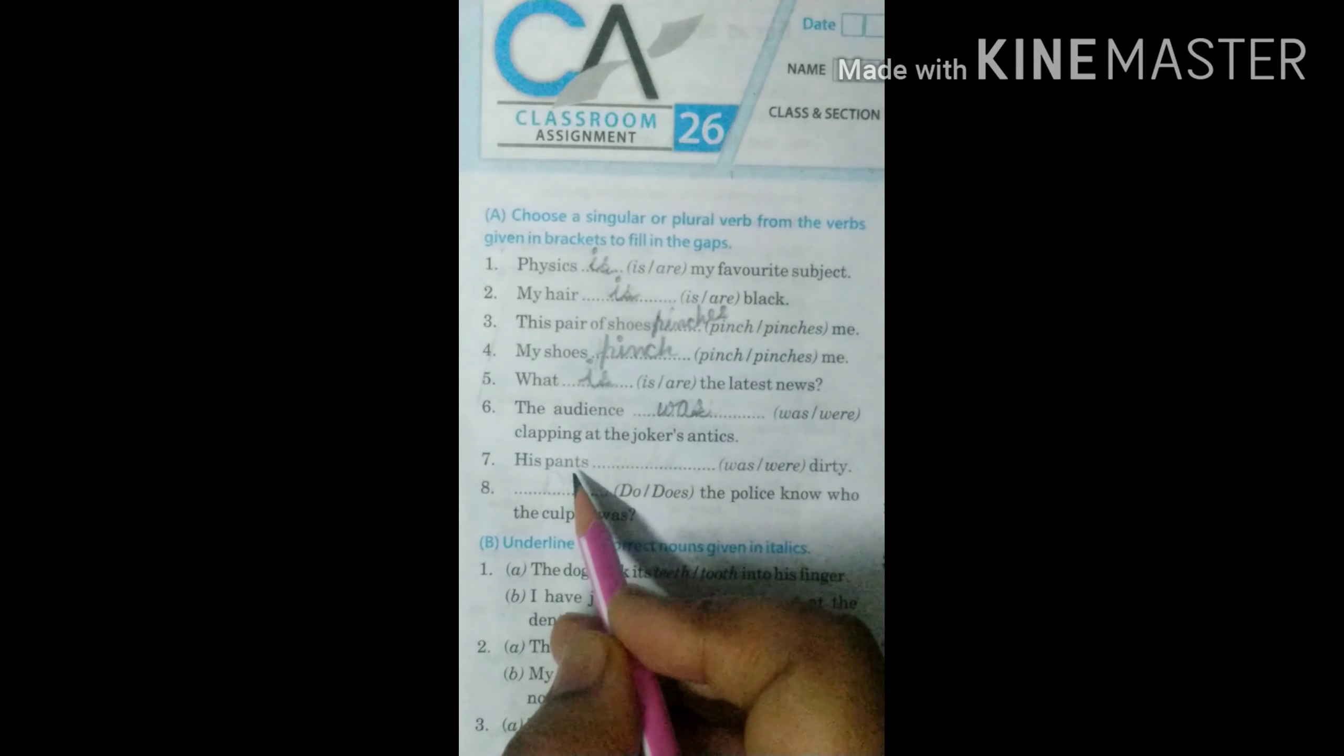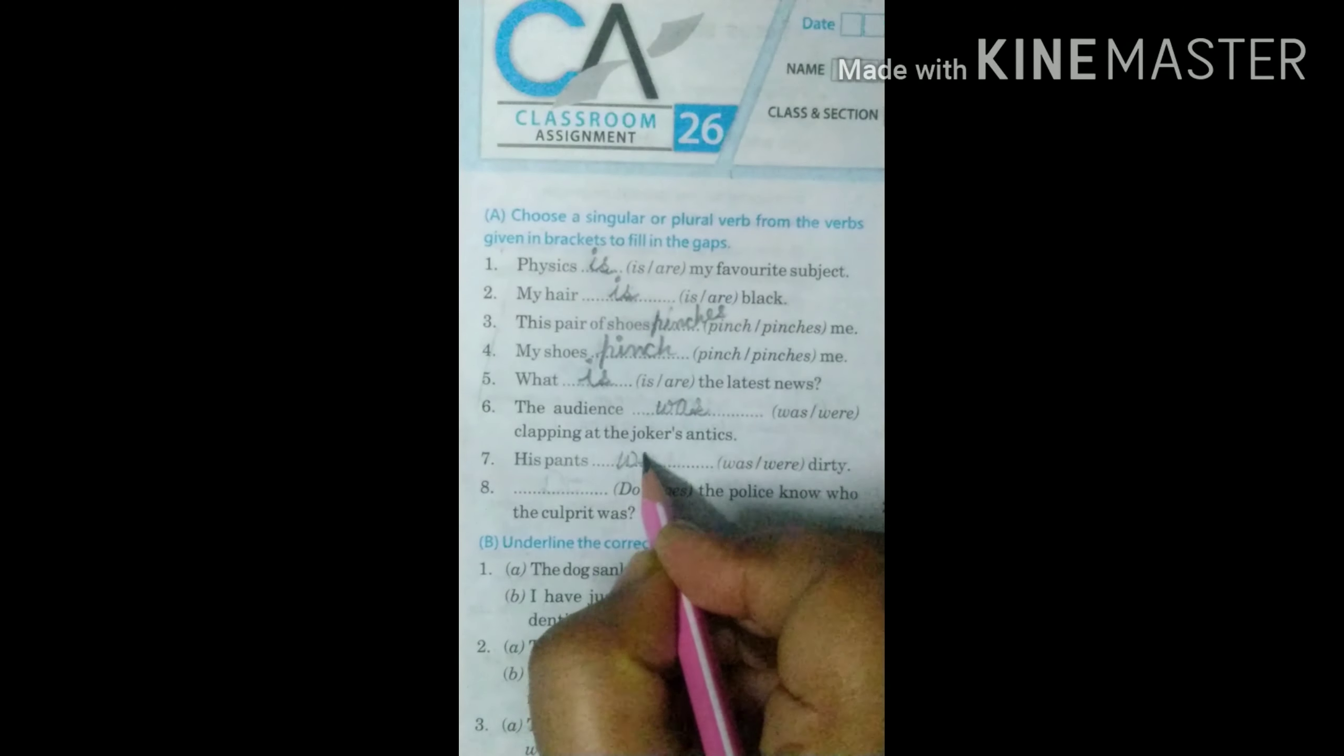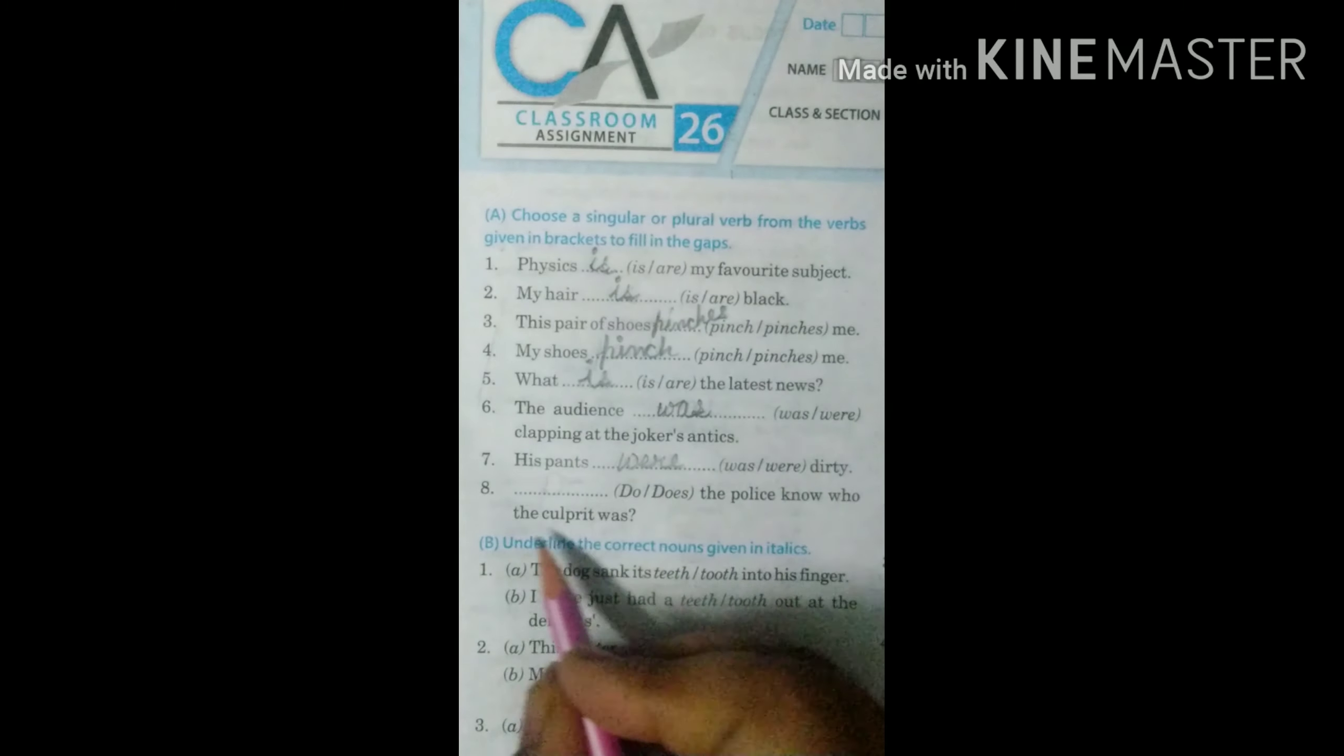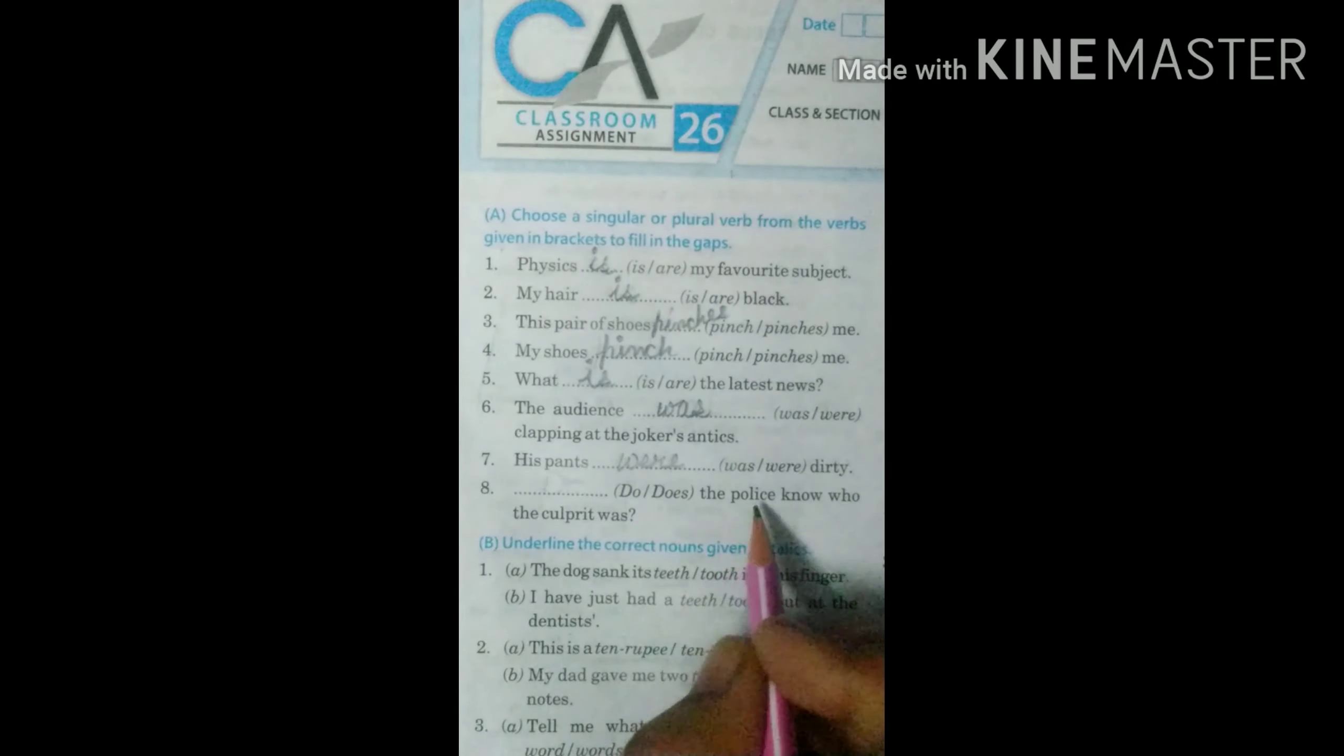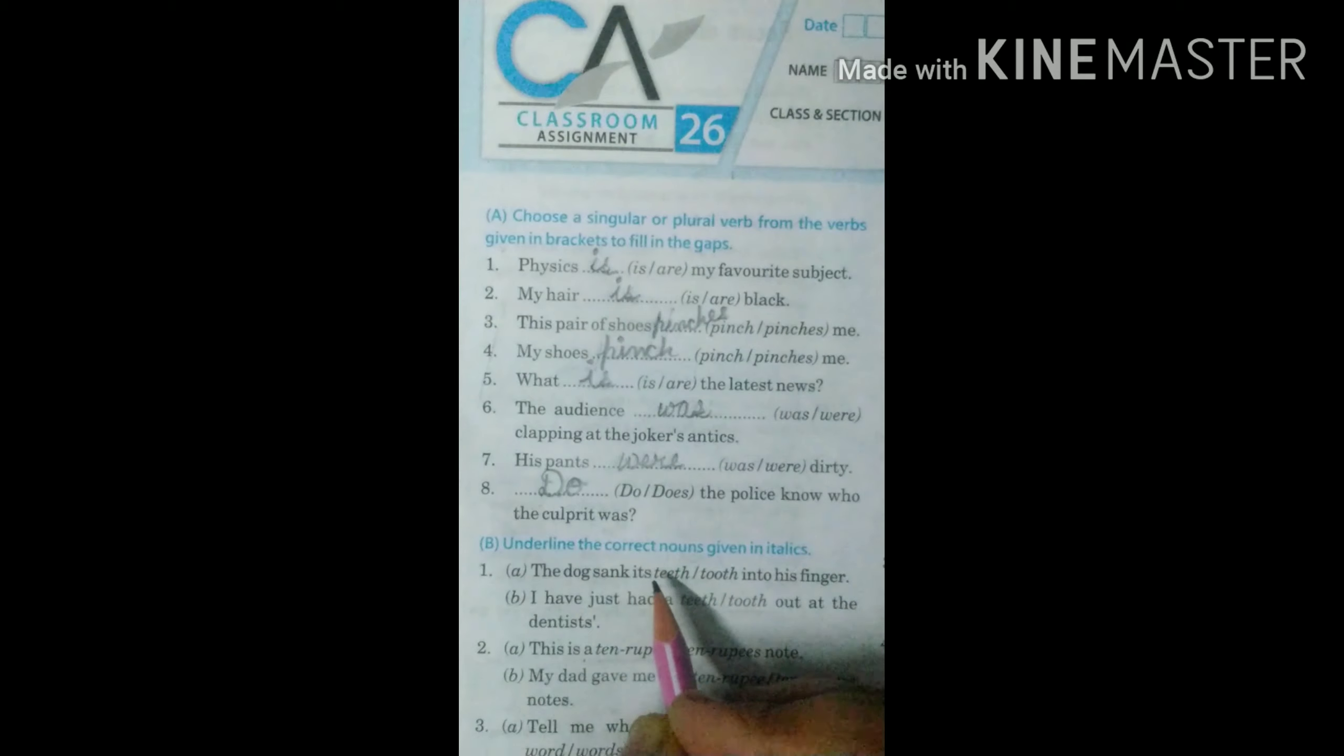His pants. We consider these words like pants, trousers, shoes, always plural. His pants were dirty. Eighth is dash the police know who the culprit was. Police. The term police, people, cattle, we take them as plural. So it will be do. The police know who the culprit was.